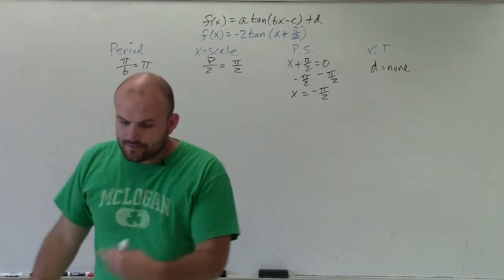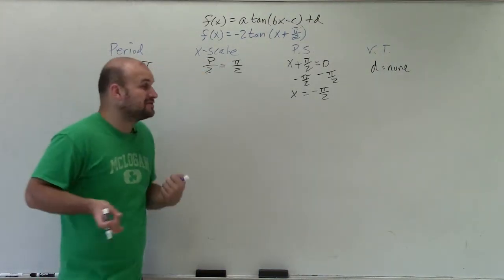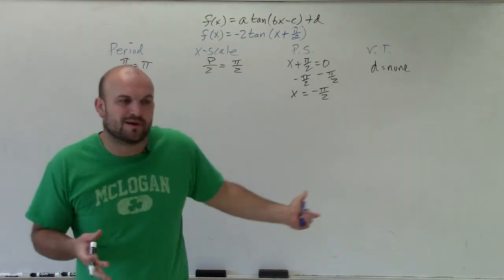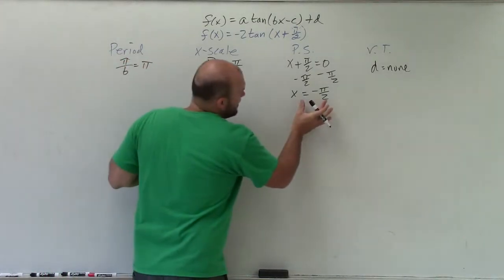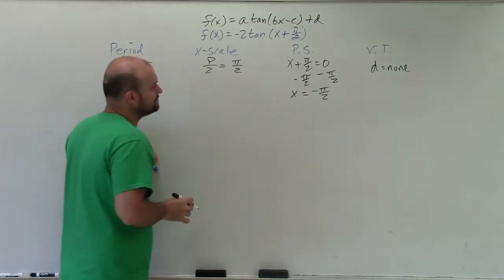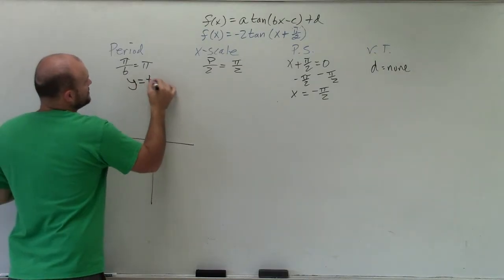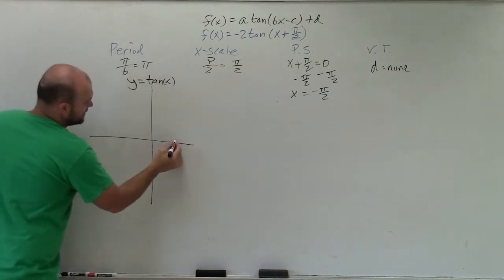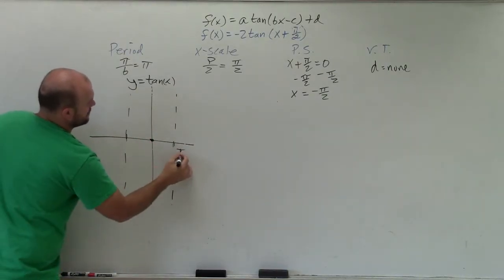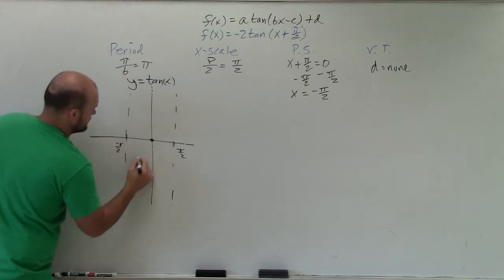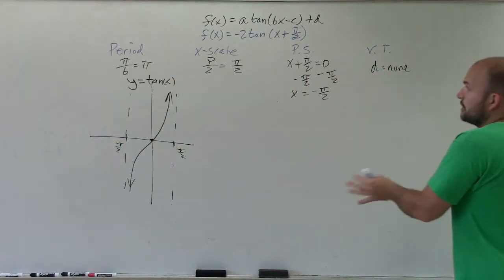When graphing this function, you have to understand what the parent graph looks like. If you don't know what the parent graph looks like for tangent, please go look it up. Here's the parent graph: y equals tangent of x. There is pi halves, negative pi halves — and the graph looks like that. That's the parent graph with no transformations.